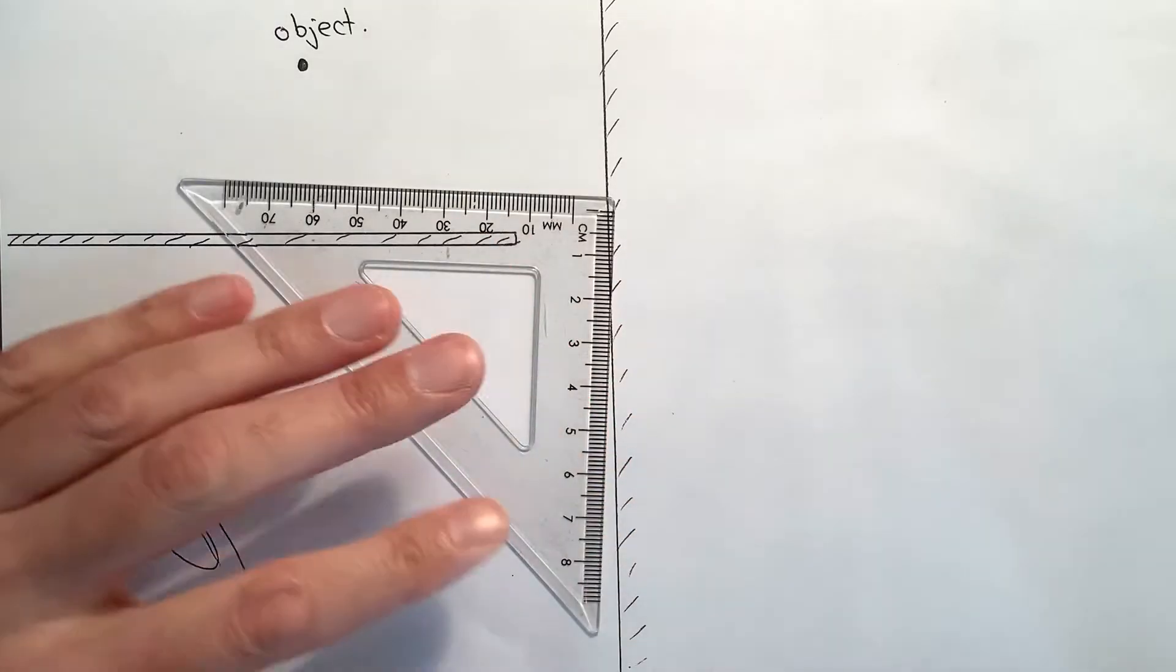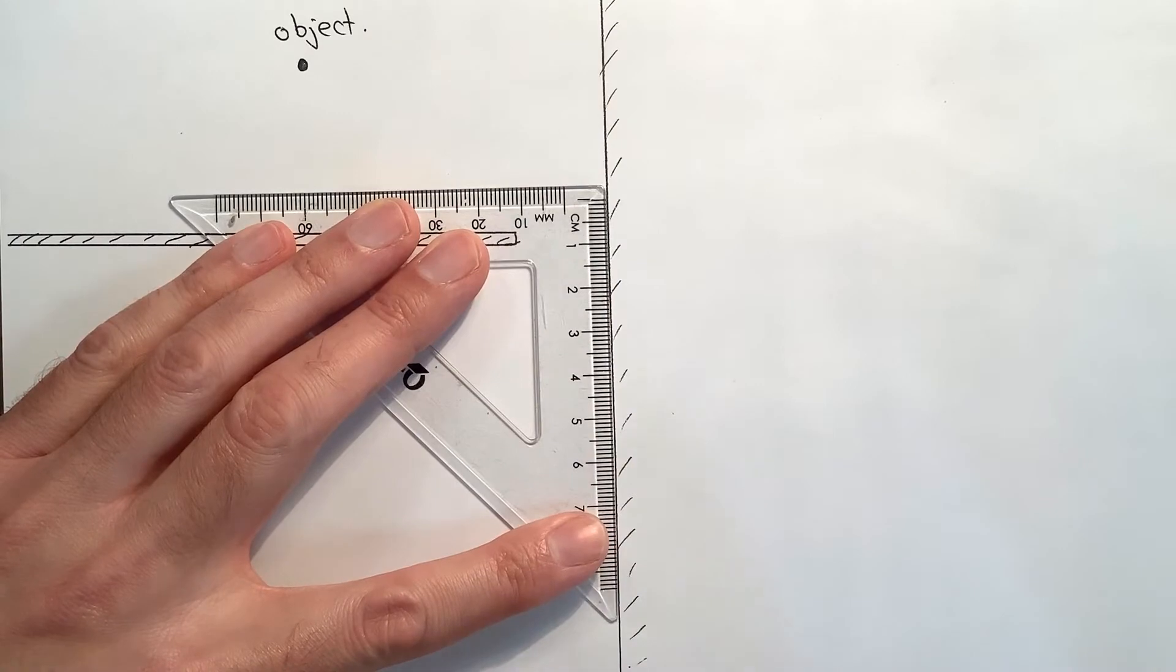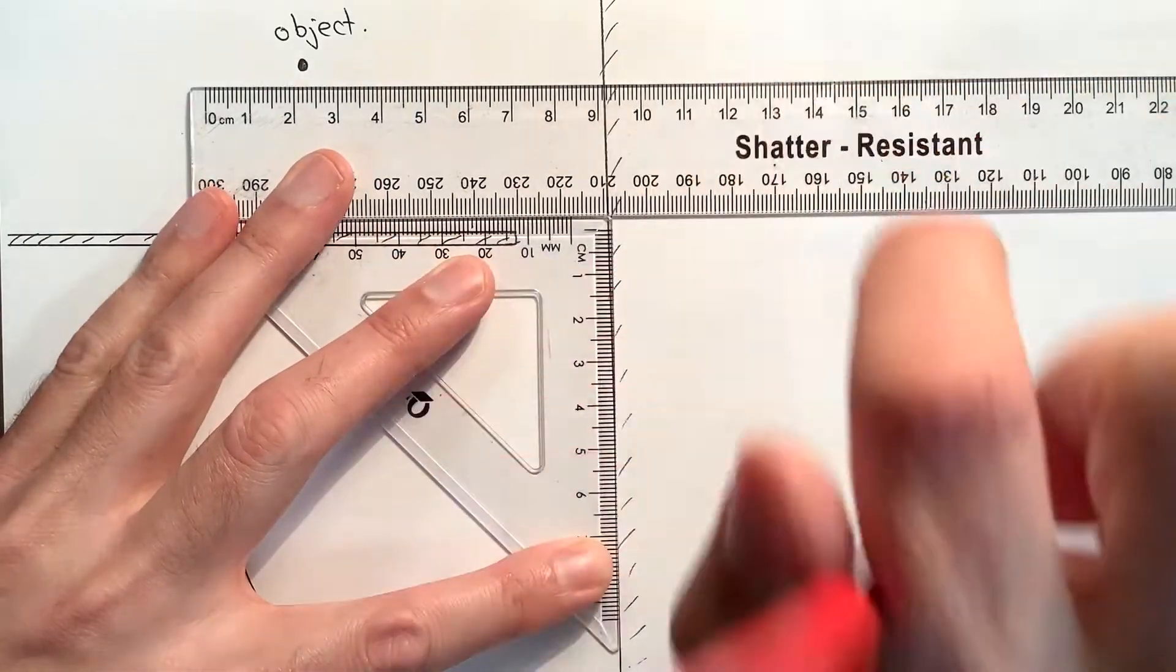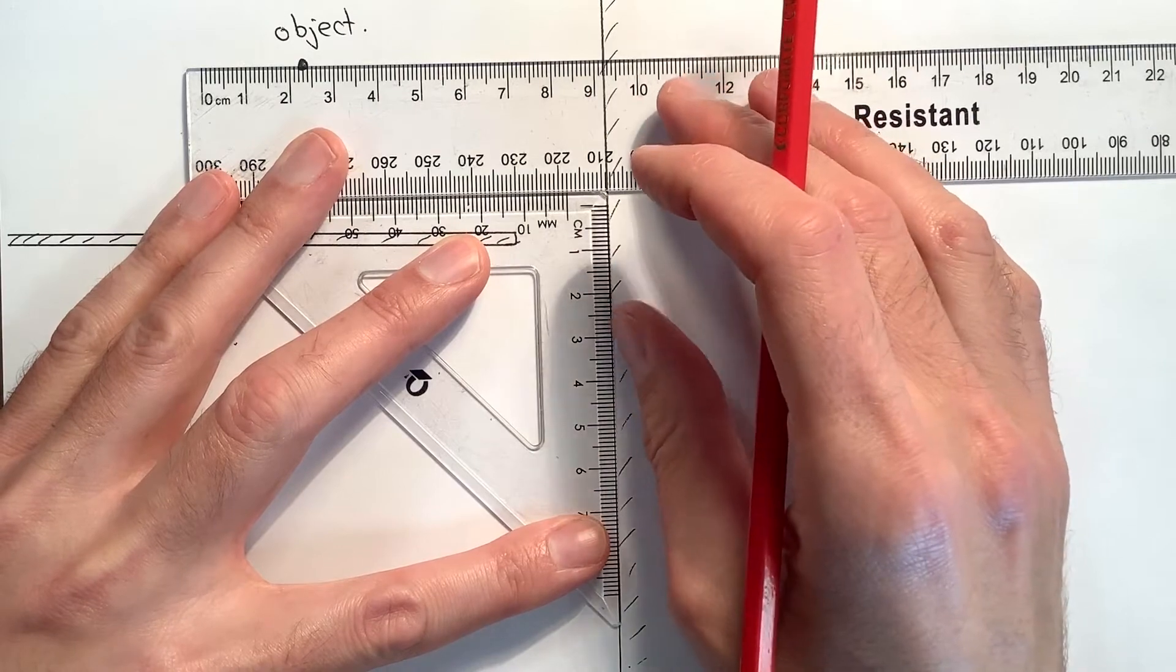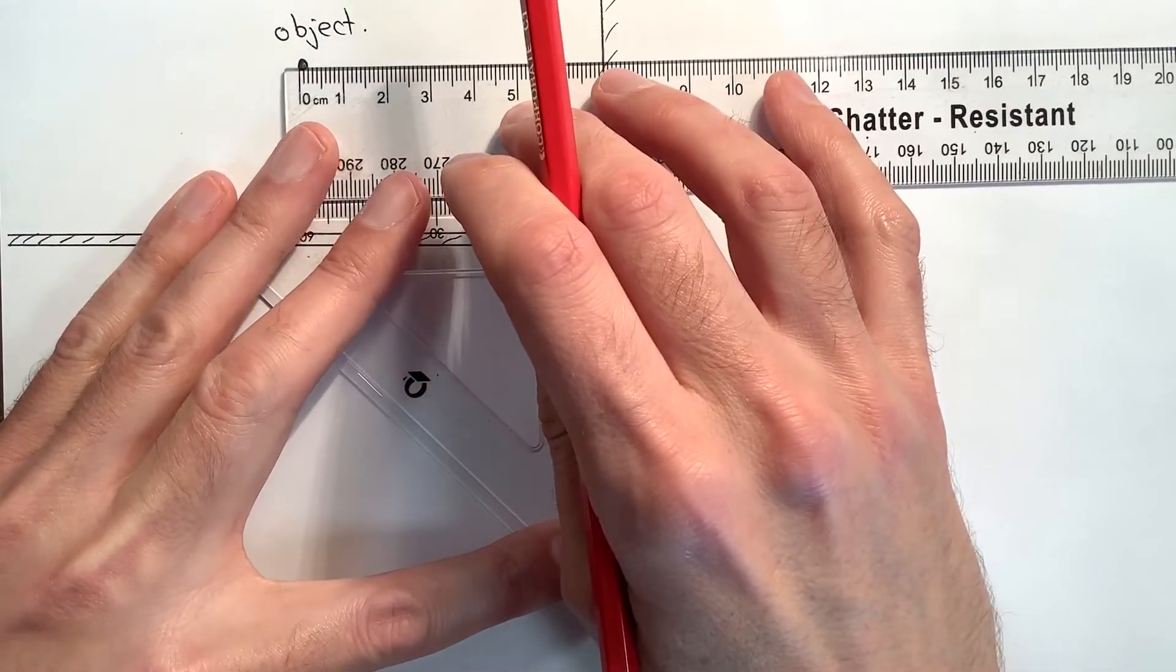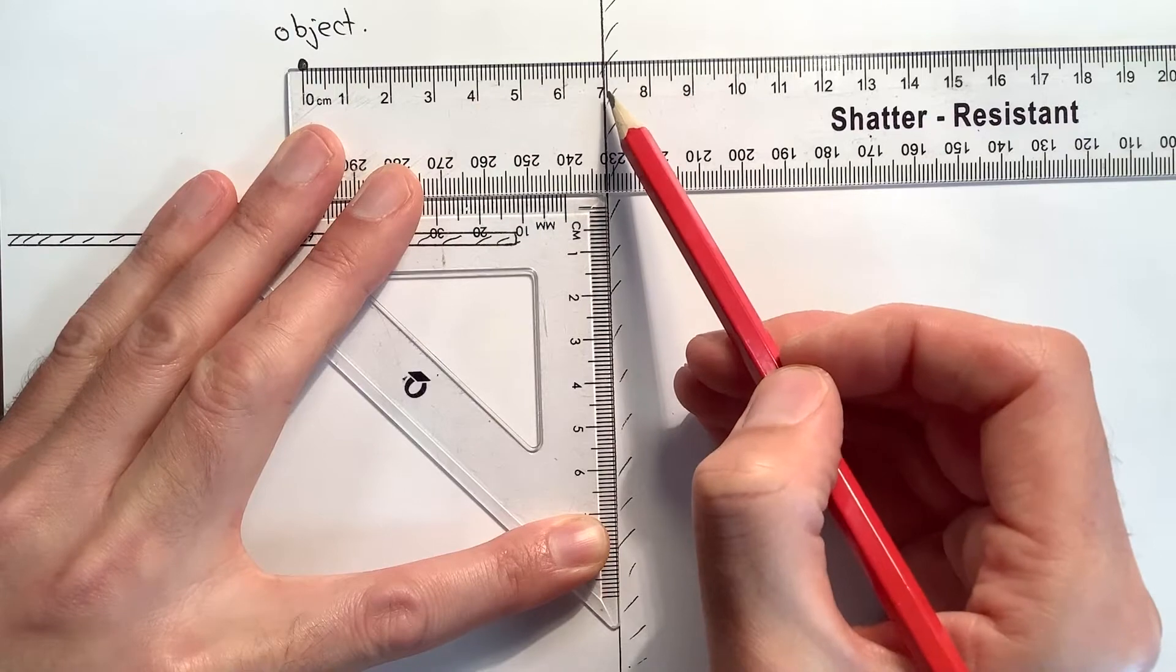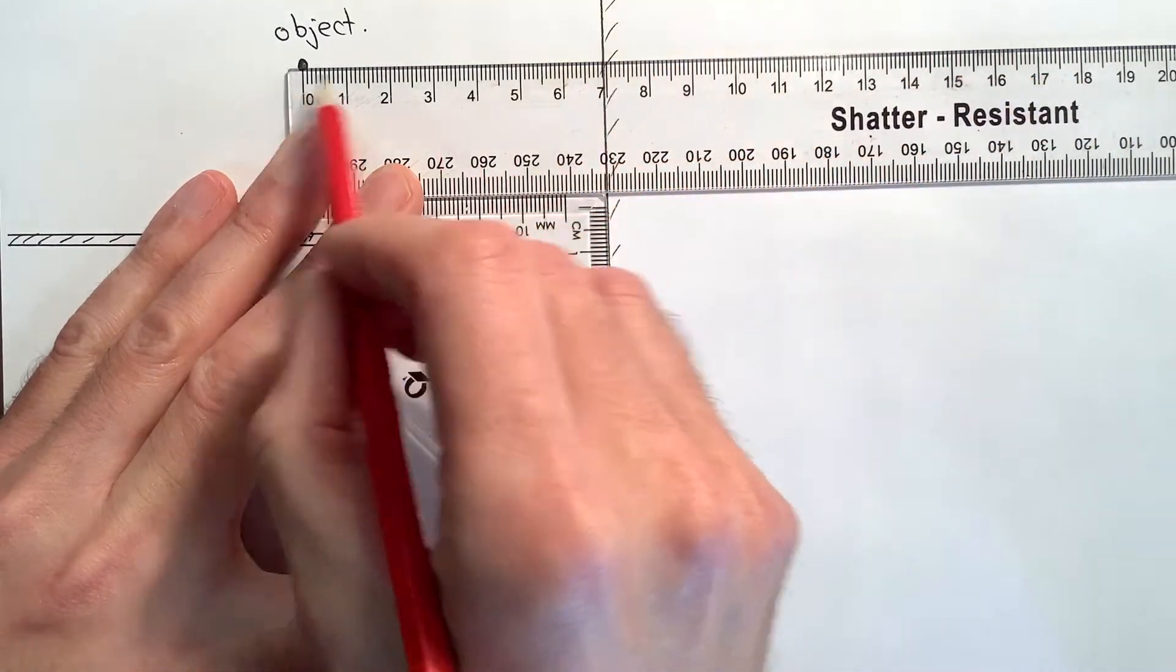To set this up, I'm going to use my set square neatly lined up with the mirror to make sure that the ruler is exactly perpendicular to the mirror. Then I'm going to use my ruler to measure the distance that the object is in front of the mirror. If I do that, I can see that the object is about 69 millimeters in front of the mirror.